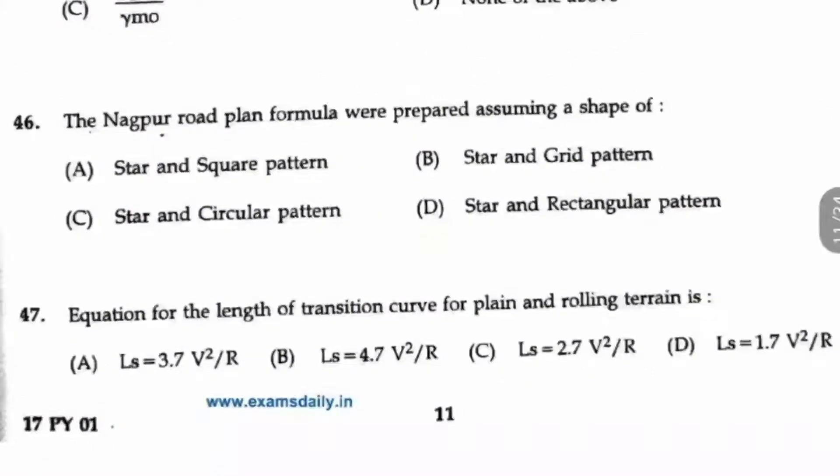Question number 46. The Nagpur road plan formula were prepared assuming a shape of star and grid pattern. So option B is the right answer.